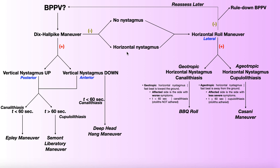More commonly, if the Dix-Hallpike maneuver is negative, it's just going to reproduce no nystagmus at all. But either way, to rule out BPPV, you need to perform the second diagnostic maneuver, which is the horizontal roll maneuver.